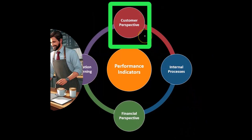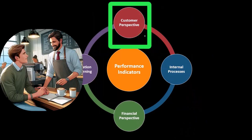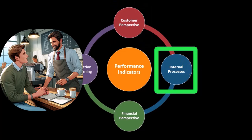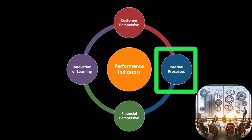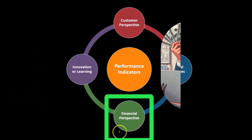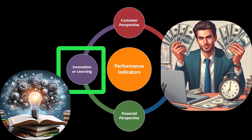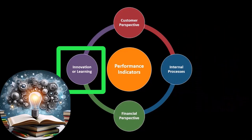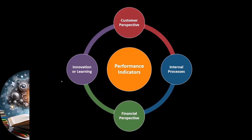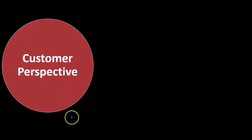We can have the customer perspective — of course we can measure things within the customer perspective. The internal processes: how are the internal processes doing, measuring the efficiency of those. The financial perspective and the innovation and learning type of perspectives. Within these items we might put together some type of measurements that we could use to judge these different areas, and we want to quantify these measurements as much as possible to be as transparent as possible.